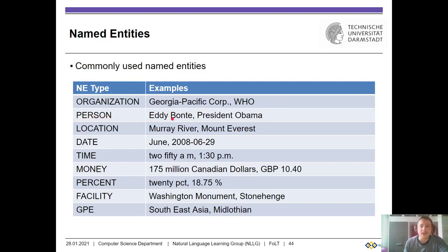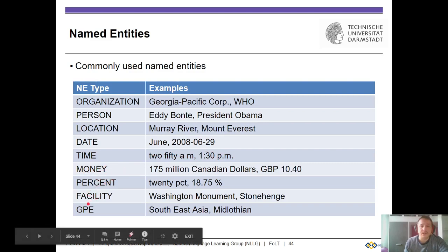Persons would contain Eddie Bonte, President Obama, President Trump, President Biden, Angela Merkel, etc. Location would contain something like Murray River, Mount Everest, Darmstadt, Frankfurt, etc. Date could be something like June 2008 or 629. Time could be something like 2:50 a.m., 1:30 p.m., etc. Other types include Money, Percent, Facility, and GPE.